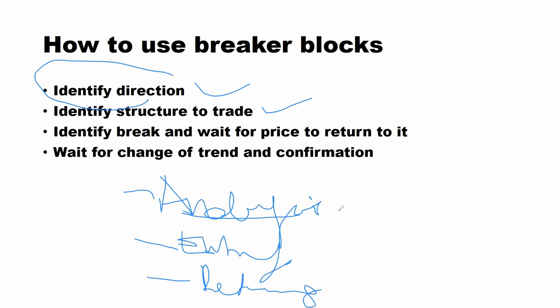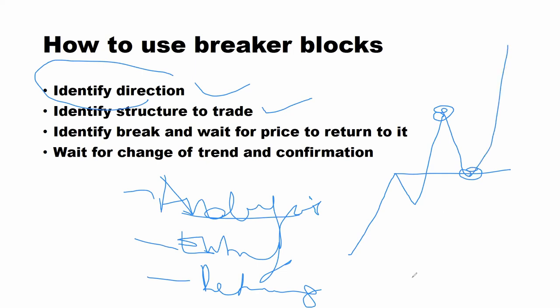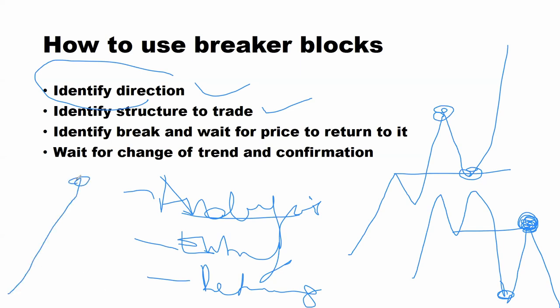When choosing timeframes, you need to have three to four timeframes — one for analysis where we get direction and structure, one for entry, and one for refining your entries. From analysis we get direction and the structure to trade. By structure to trade, you identify: are you trading higher highs? Are you a trend trader? Are you trading a retracement to a point or trading the continuation? Are you a trader who is trading an M — waiting from down here to retest the neckline, or waiting for a continuation from the neckline to push down? It's very important to identify direction and identify the structure you're trading.